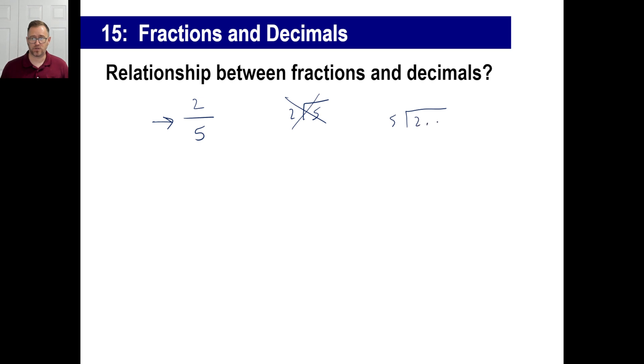And of course, you'll have to put a little decimal there because it doesn't go. So five into 20 is four, and you can just stop right there. That's it. You can quit because it works perfectly.